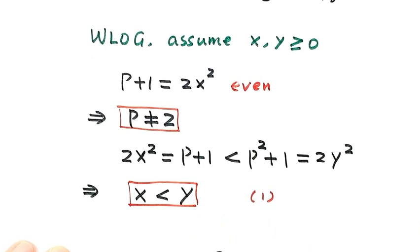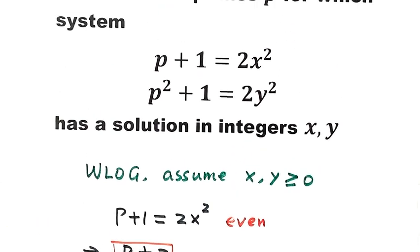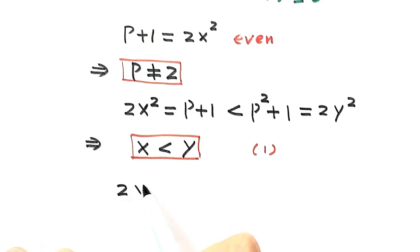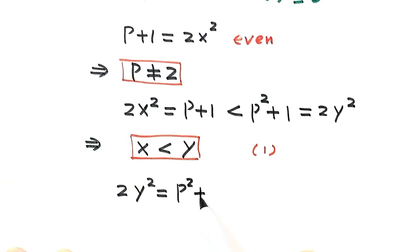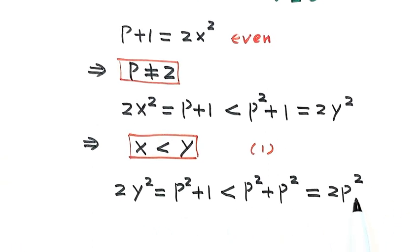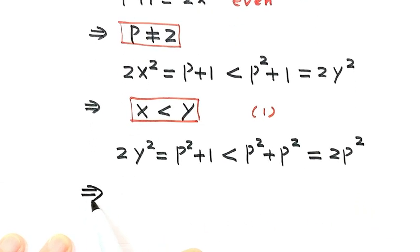Now let's look at equation 2: 2y squared equals p squared plus 1, which is less than p squared plus p squared equals 2p squared, because p is a prime greater than 2. So 2y squared is less than 2p squared, which implies y is less than p. This is Result 2.